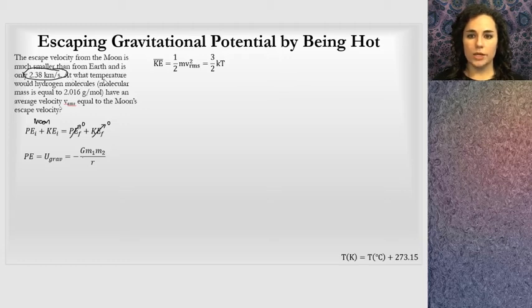You set the potential energy equal to the kinetic energy and you get this number. The problem asks: at what temperature would a hydrogen molecule (remember, a hydrogen molecule is H2) have an average velocity equal to the moon's escape velocity? We want to know if it has the velocity to escape, what temperature does that correspond to? Our equation relating those two variables is right here. We can find the temperature knowing v_rms. A problem is we're not given the molecular mass—we're given the molar mass, which is the mass of one mole of hydrogen: 2.016 grams.